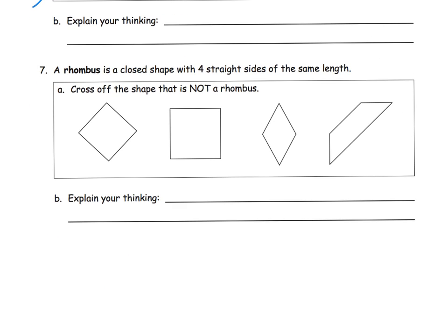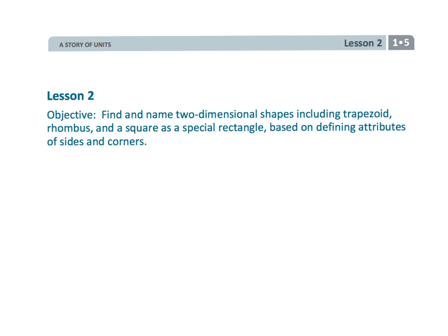And the last, a rhombus is a closed shape with four straight sides that are the same length. So which one of these guys is not a rhombus? Does this have four sides with the same length? Yep. Does this have four straight sides that are the same length? Yep. How about this one? Yep. Oh, this guy. That guy is the guy that gets crossed off because these little sides are short and this side is long. So makes it not a rhombus.